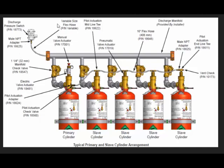This means you need to have a variable size flex hose in between. This is the check valve — check valve size matters. If you look at the electric valve, it has pilot actuations. The first cylinder we call the primary cylinder, and the rest are slave cylinders — three or four slave cylinders minimum. We have five cylinders here.